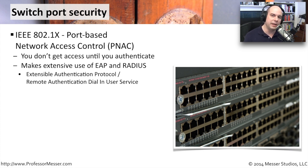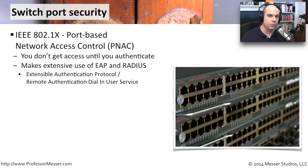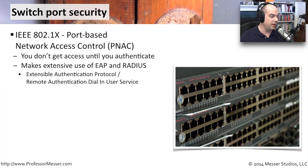That way, someone couldn't walk into your conference room, plug in, and see your network, because they wouldn't have the authentication credentials. It uses technologies called EAP and RADIUS. EAP stands for Extensible Authentication Protocol — a very standard way to authenticate on a network. RADIUS is a way to store and communicate authentication details like usernames and passwords, and stands for Remote Authentication Dial-In User Service.